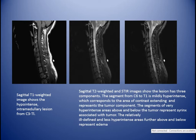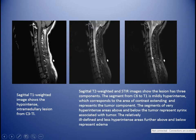The appearance is more complicated because hemorrhage is more common, with cysts and other features. Sagittal T1-weighted image shows a hypointense intramedullary lesion from C3 to T1. On sagittal T2 and STIR images, the lesion has three components: the segment from C6 to T1 is mildly hyperintense, corresponding to the area of contrast enhancement representing the tumor component. The very hyperintense areas above and below represent syrinx, and an ill-defined area represents edema.